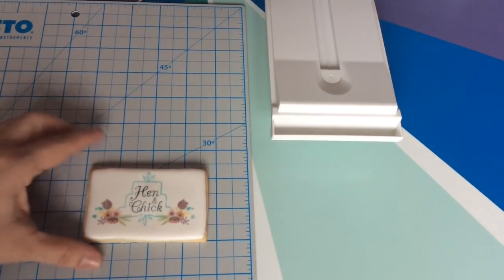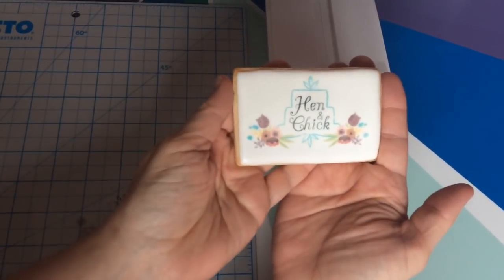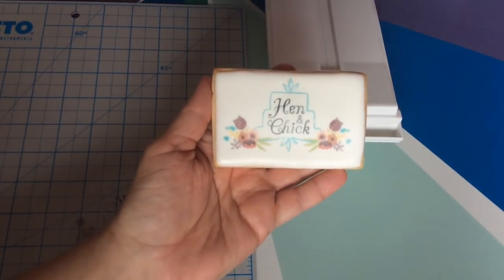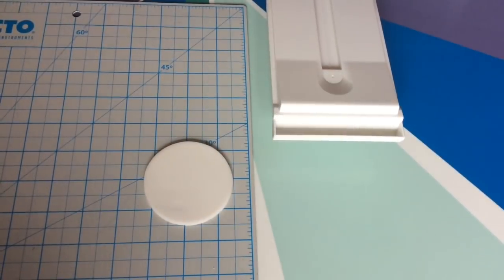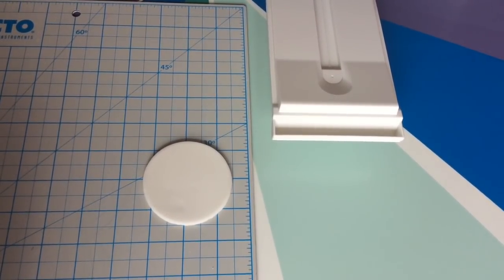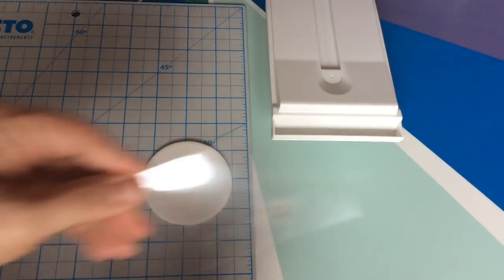Perfect! I printed this one in color, and I could just add a nice border and that would be finished. Or I could have printed it in grayscale and piped over it in whatever colors I wanted. We already know that this method works on fondant, so it's a great way to make cookie toppers with fondant or cupcake toppers.